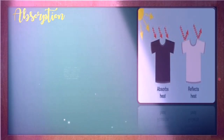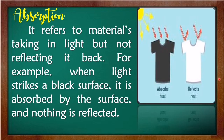Next is absorption. Absorption refers to the materials taking in light but not reflecting it back. For example, when light strikes a black surface, it is absorbed by the surface and nothing is reflected. The black shirt absorbs the light, and a white shirt reflects the heat. If you are wearing a black shirt on a sunny day, you feel the heat of the sun.